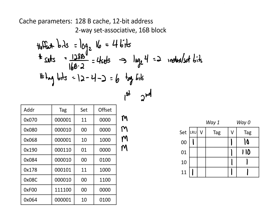The fifth access goes to set 0 — tag 1,0 matches what is in valid way 0, so this is a hit. The sixth access goes to set 3, looking for tag 1,0,1. There is one entry in set 3, but it doesn't match, so it's a miss. We put tag 1,0,1 into the least recently used way (way 1), set it valid, and update LRU to 0. The seventh access looks at set 0 — tag 1,0 is already in the cache, so it's a hit. The eighth access also goes to set 0 but for a different tag — that's a miss, and we update the tag for the replaced entry and set LRU to 0.